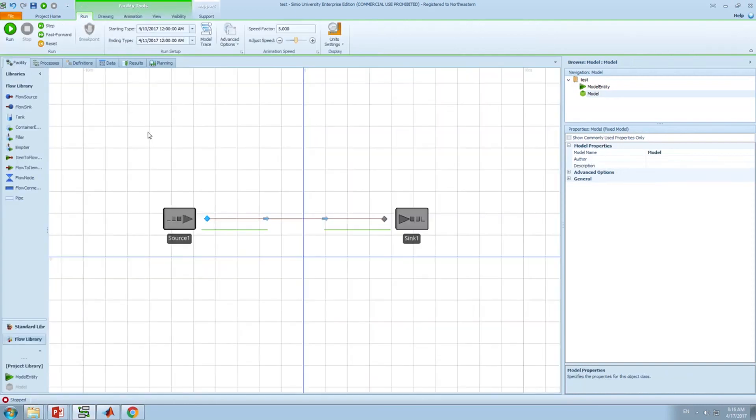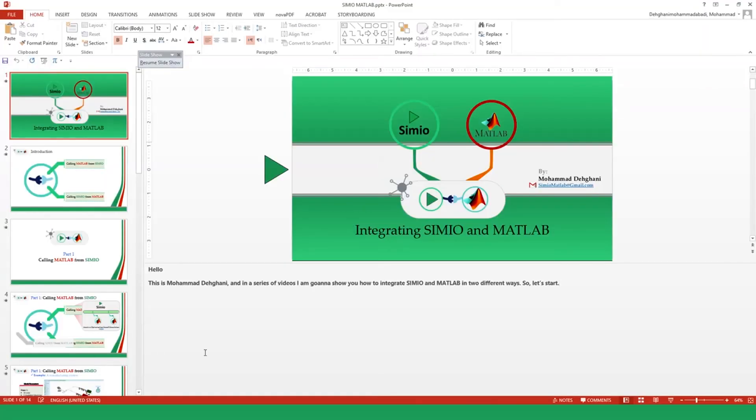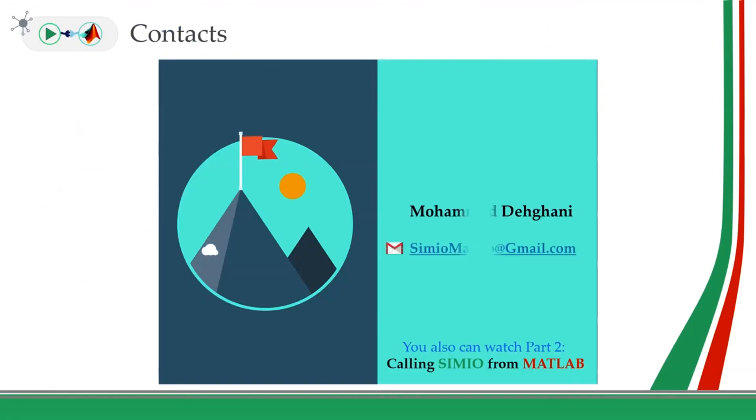Hopefully, you enjoyed it and could use it for your future research works and future simulation modeling. Let me go back to my slides. That was it. I know it was really simple and easy to use. And if you have any questions, you can contact me at simiomatlab at gmail.com. Also, if you're interested to know how to call Simio from MATLAB, which is the other way to integrate these two software packages, you can watch the second video, which is part two. Thank you so much. Bye.